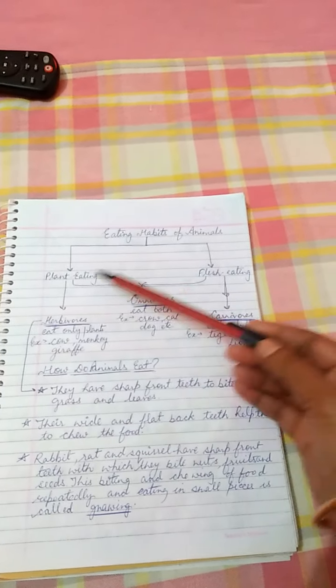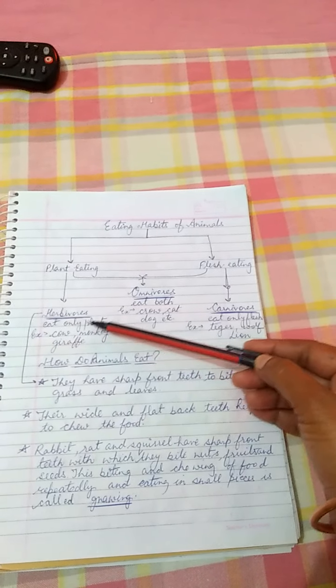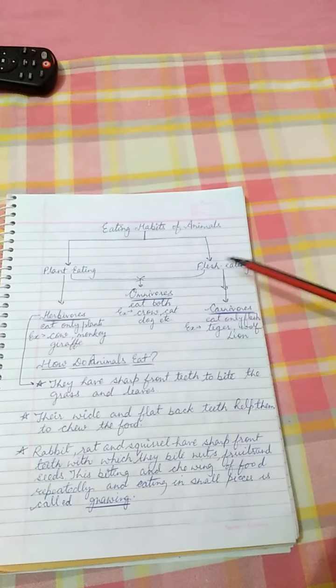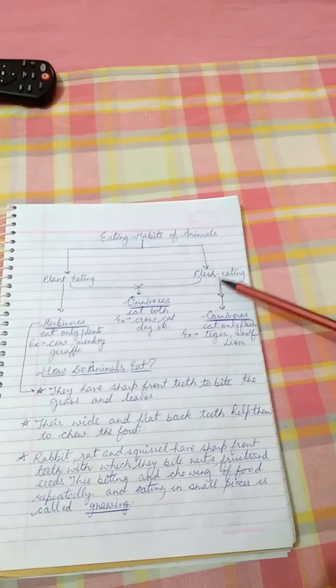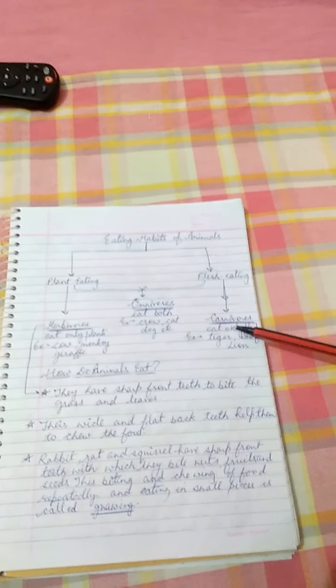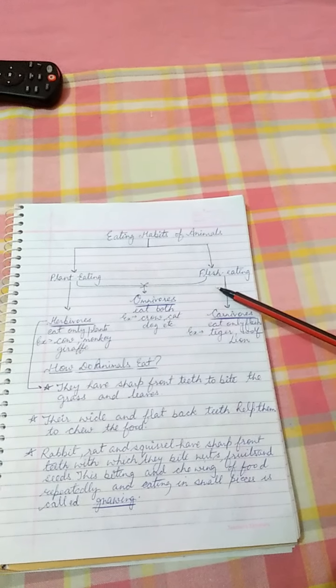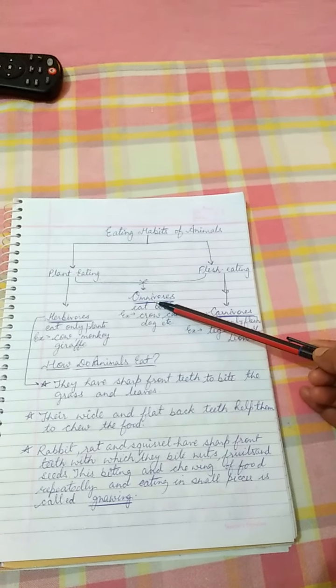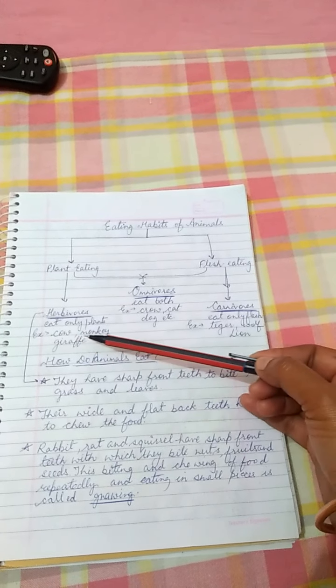Plant-eating animals are basically known as herbivorous because they eat only plants. Flesh-eating animals - some animals eat only flesh, so they are known as carnivorous animals. And some animals eat both plants and flesh, so they are called omnivorous animals.